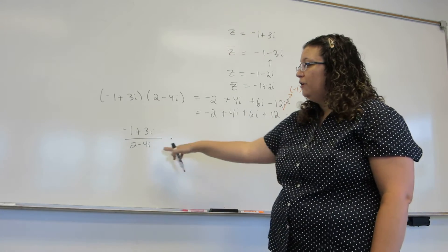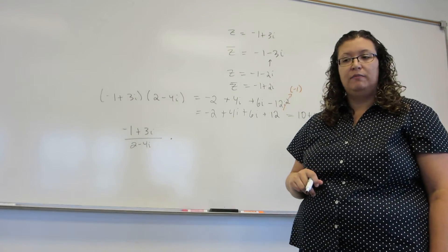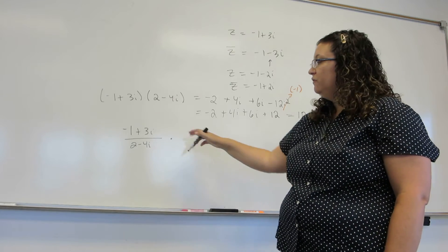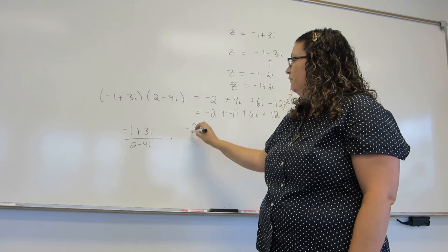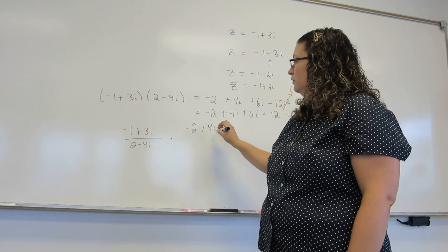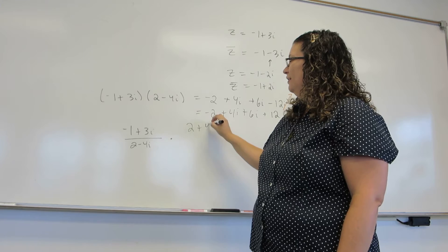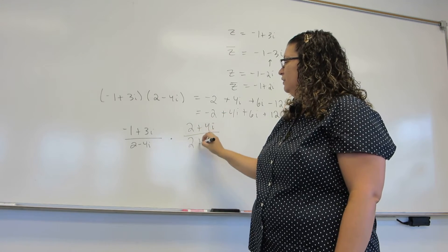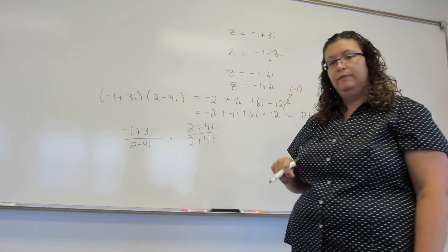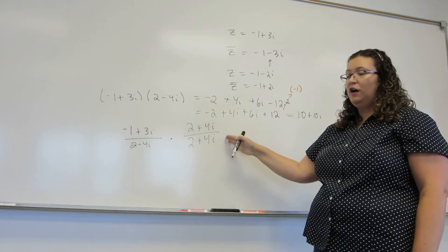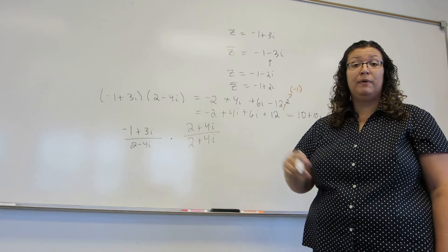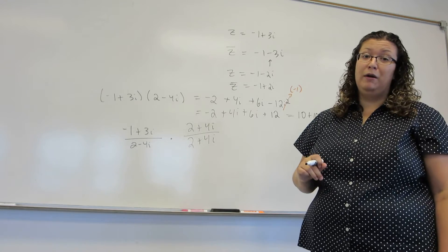So we're going to use the same trick in order to clean up a division. Because we should never have i's remaining in the denominator. So in order to clean up the division I'm going to multiply top and bottom of the fraction by the conjugate of the denominator. Now I have to multiply top and bottom by that number, because it's really just multiplying by 1. And I can always multiply by 1.